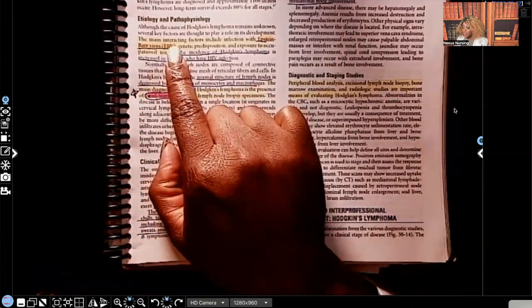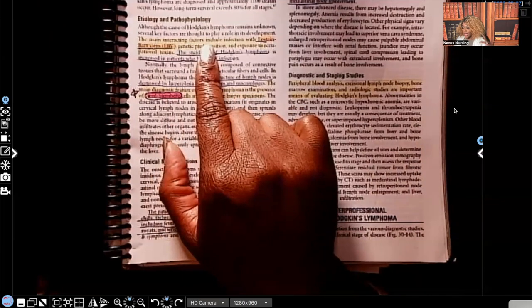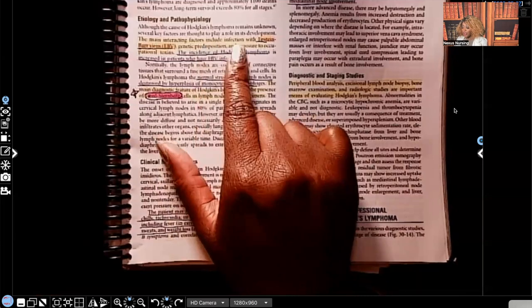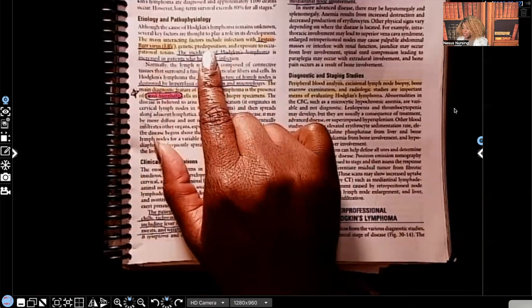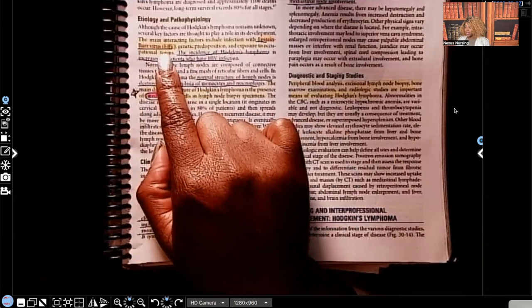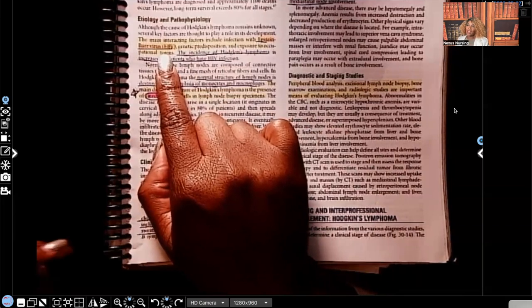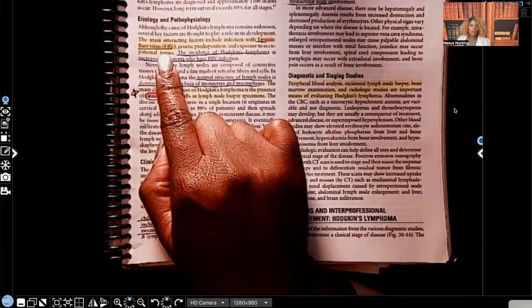The main interacting factors include, so we're talking about the etiology and pathophysiology. The main interacting factors include infection with Epstein-Barr virus, a genetic predisposition and exposure to occupational toxins. I underlined that Epstein-Barr virus because when it comes to Hodgkin's lymphoma, there are just a couple things that you're most likely to be tested on because I see it over and over and over again. And Epstein-Barr virus is one of them. So you need to know that as a main interacting factor.